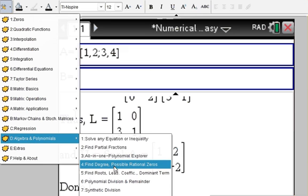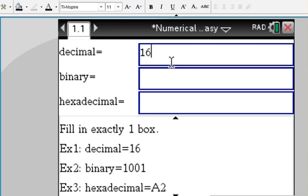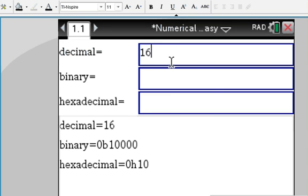Lastly, on a lighter note, let's convert some numbers. Say 16, as you may know, is 10000 in binary, or just 10 in hexadecimal.